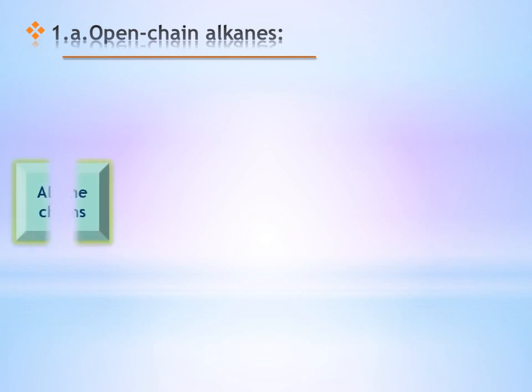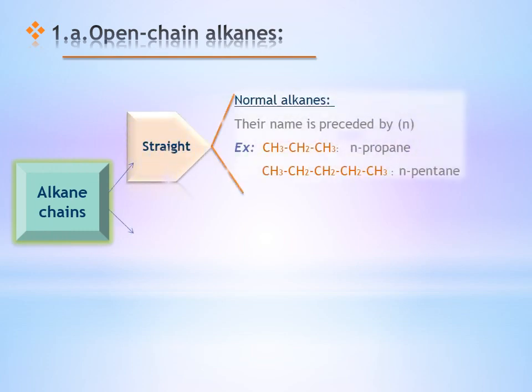What are the kinds of open-chain alkanes? An alkane chain could be a straight chain, named by using N as a prefix before the name. For example, here we have three carbon atoms, so it is propane, and by IUPAC we add N, so it is N-propane. And here, five carbons, then it is N-pentane. This is for the straight chain.